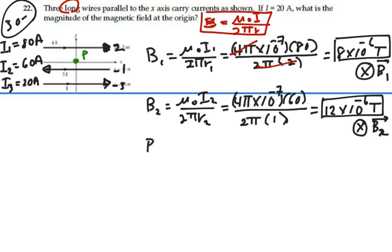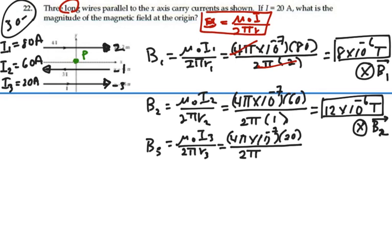For magnetic field 3, we have mu naught i3 over 2pi r3. That's 4pi times 10 to the minus 7 times 20 amps over 2pi, and our distance from the origin is 3 meters. So we're going to have 4pi over 2pi, which will leave me at 2. And then we're going to have 40 divided by 3, which will be 13.3 times 10 to the minus 7. So it will be 1.33 times 10 to the minus 6 tesla.